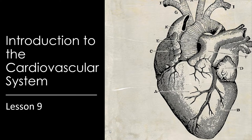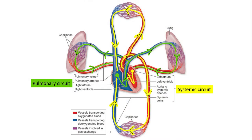The vessels that comprise the circulatory system are divided into two circuits: the pulmonary circuit and the systemic circuit. The pulmonary circuit carries oxygen-poor blood from the heart to the gas exchange surfaces of the lungs, and then returns that oxygen-rich blood to the heart, while the systemic circuit transports oxygen-rich blood to the rest of the body and returns the oxygen-poor blood back to the heart.